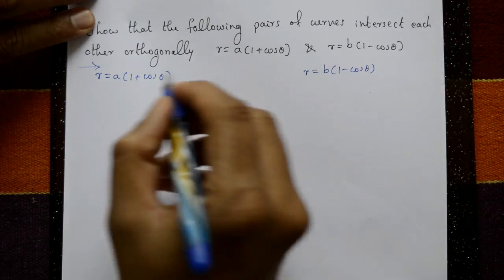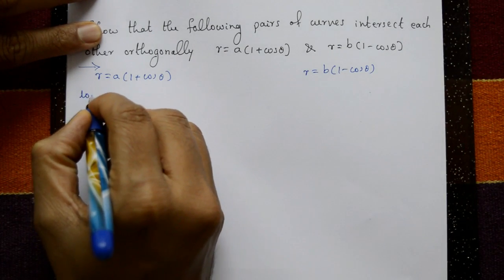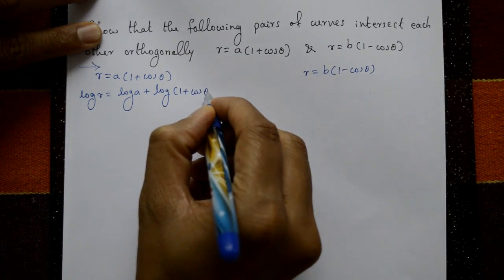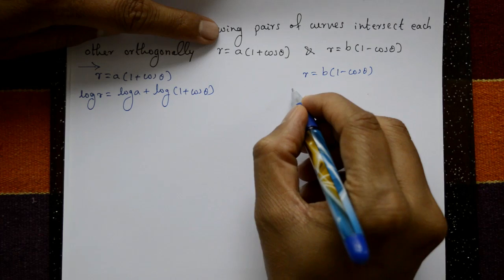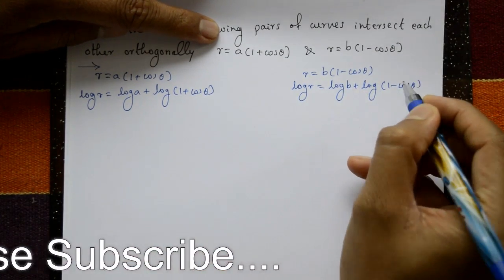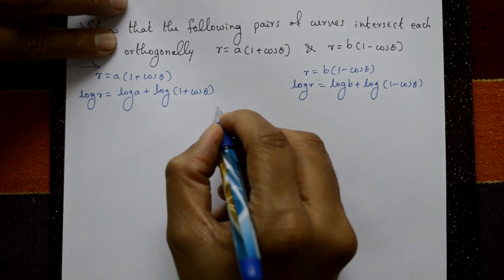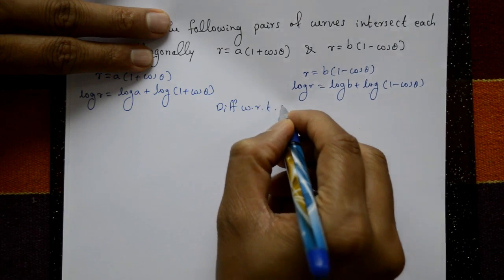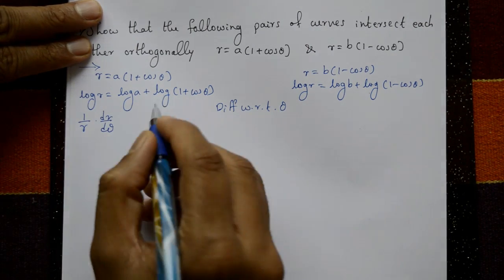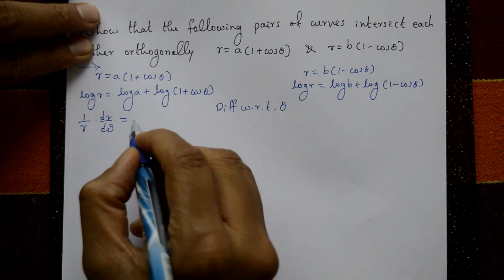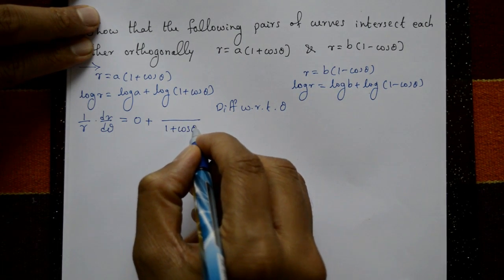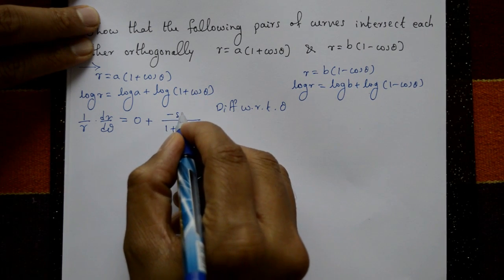Taking log on both sides for both curves. Log r is equal to log a plus log of (1 + cos theta). For the second curve, log r is equal to log b plus log of (1 - cos theta). Now differentiate with respect to theta. For the first curve: 1 by r into dr by d theta equals 0 plus 1 upon (1 + cos theta) multiplied by the derivative, which gives minus sin theta.